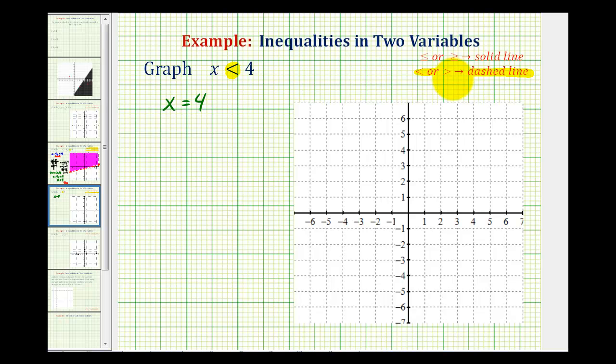It's dashed because the line is not going to be part of the solution. If the inequality symbol was less than or equal to or greater than or equal to, because of the equal part, we'd have a solid line, meaning the line is part of the solution.